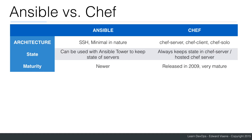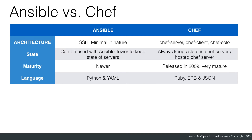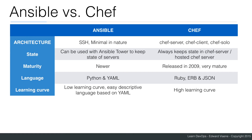Ansible is newer than Chef, so you will see that Chef is more mature and has more features than Ansible. Ansible uses Python as a programming language and YAML files as configuration files. Chef uses Ruby as a programming language and embedded Ruby and JSON as configuration files. Because of the simplicity, Ansible has a low learning curve and uses a relatively easy language to describe the configuration, called YAML. Chef is much more complex and has a higher learning curve.